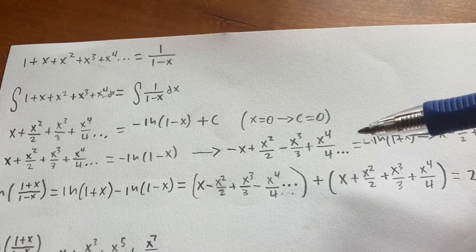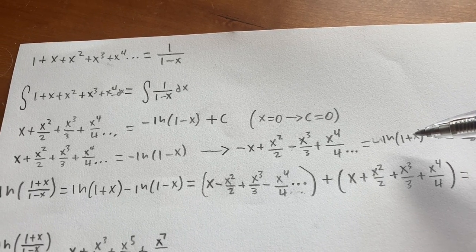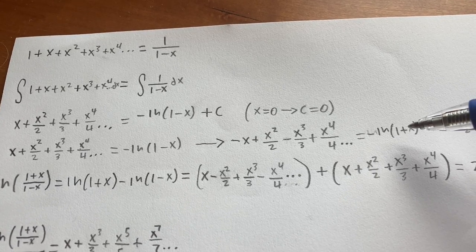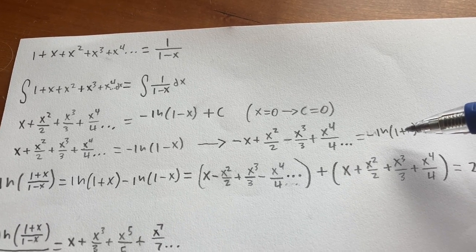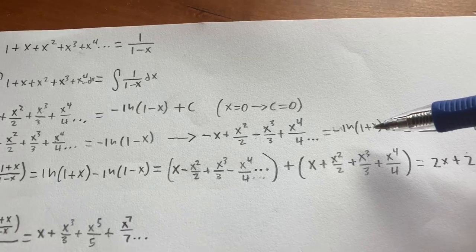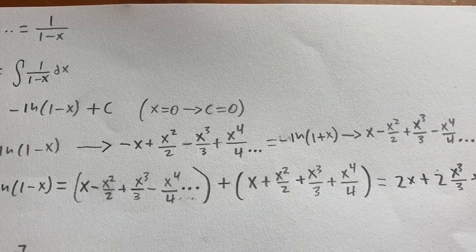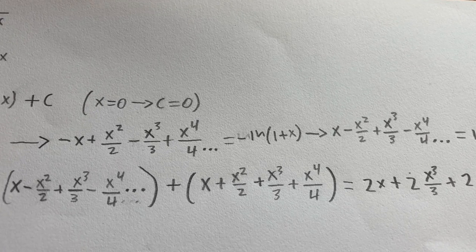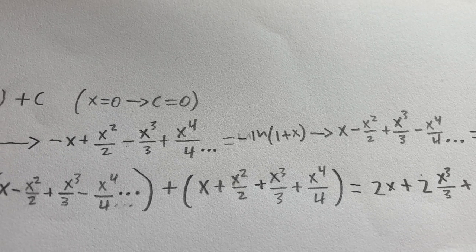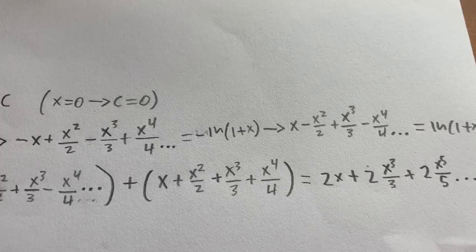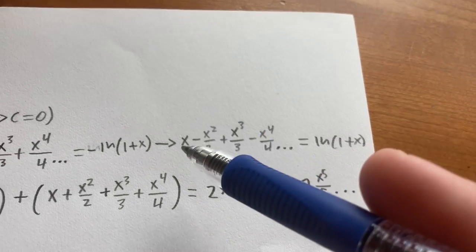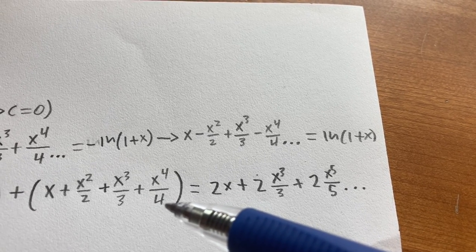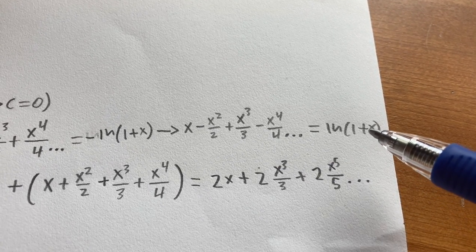On the right-hand side, the only thing that changes is we go from negative natural log of 1 minus x to negative natural log of 1 plus x. So we get the equation: negative x plus x squared over 2 minus x cubed over 3 plus x to the fourth over 4, etc., is equal to negative the natural log of 1 plus x. By multiplying both sides by negative 1, we get that x minus x squared over 2 plus x cubed over 3, etc., is equal to the natural log of 1 plus x.